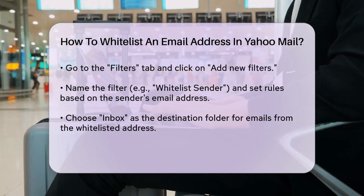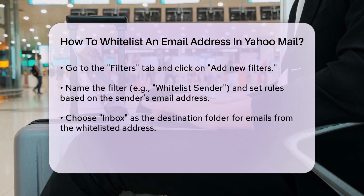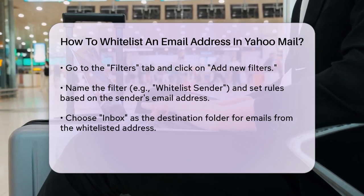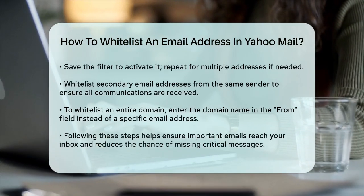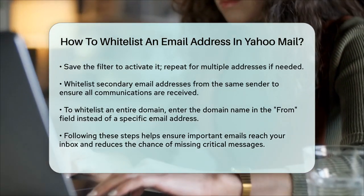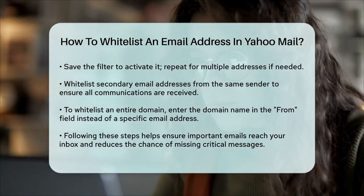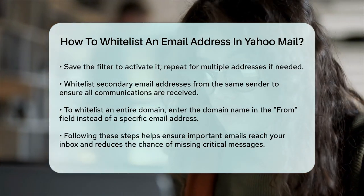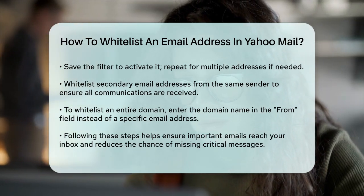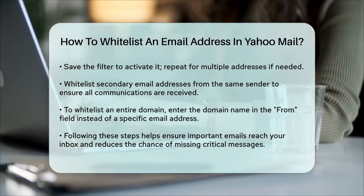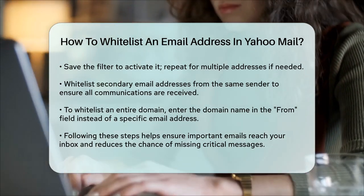If you need to whitelist multiple email addresses, you can repeat this process for each one. Another important step is to make sure you whitelist any secondary email addresses from the same sender. For instance, if you're whitelisting news@cubities.com, you might also want to whitelist support@cubities.com. To whitelist a whole domain, you can enter the domain name in the From field instead of a specific email address. For example, entering cubities.com would whitelist all emails from any address within that domain.